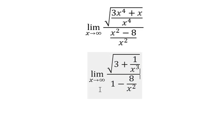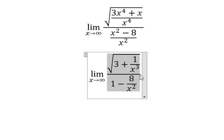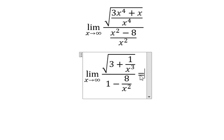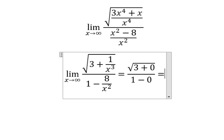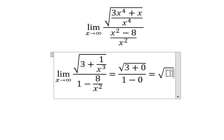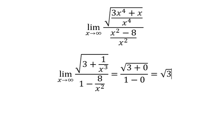When x approaches positive infinity, one divided by positive infinity gives you zero. This one also gives you zero. Now we have the final answer: the square root of three. This is the end, thank you for watching.